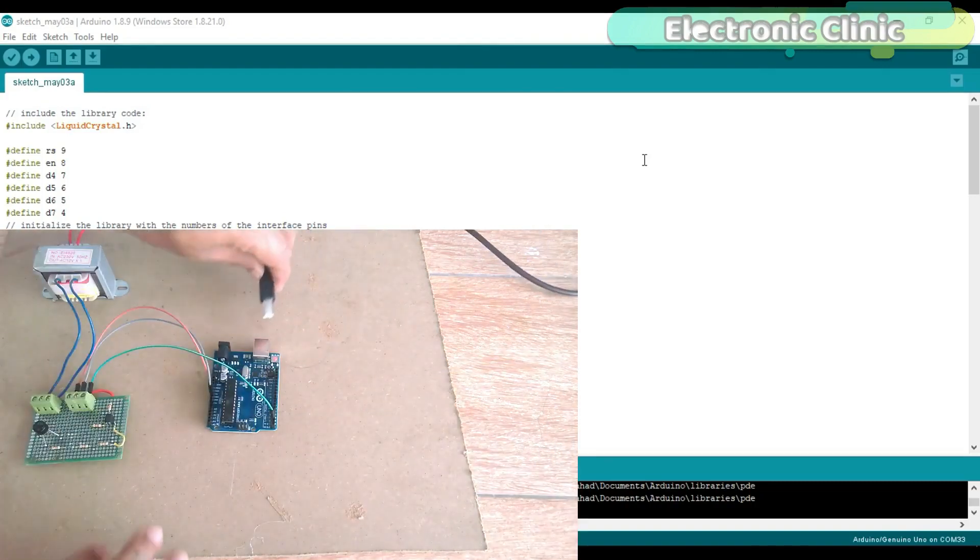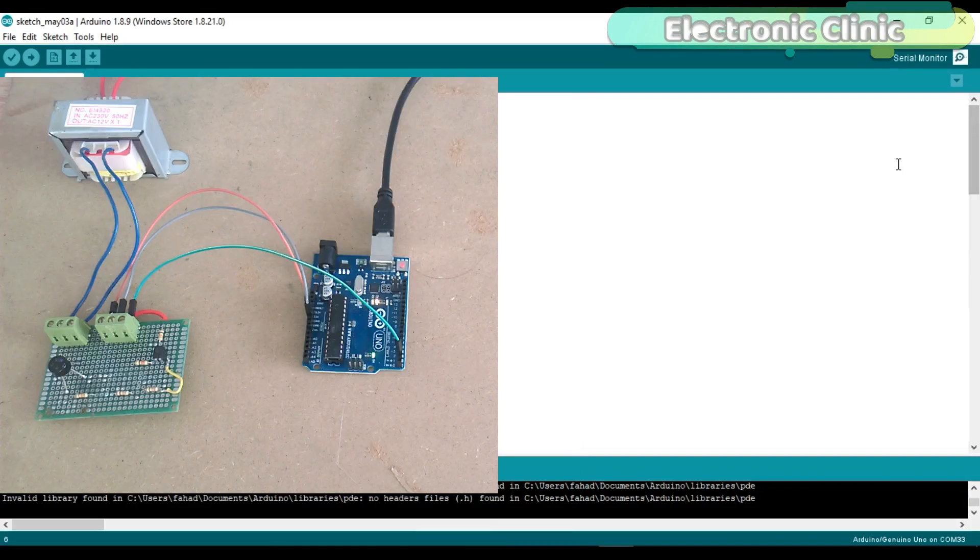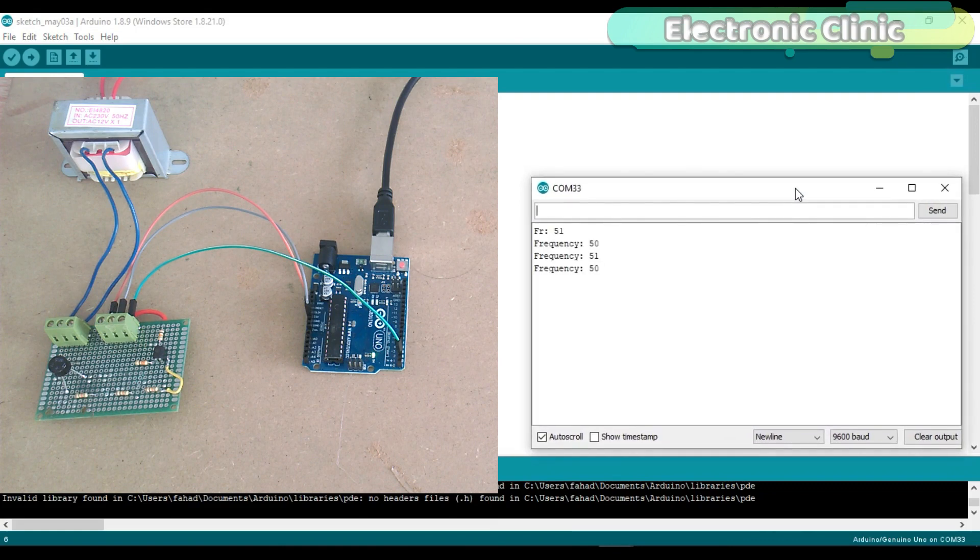In today's episode you will learn how to make an Arduino based 110 or 220 volt AC mains frequency monitoring system using a zero crossing detector based on the EL817 optocoupler. This is the second version of the frequency monitoring system.